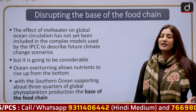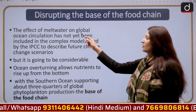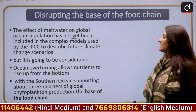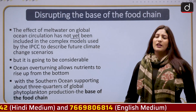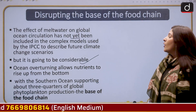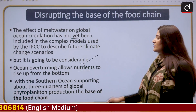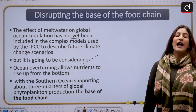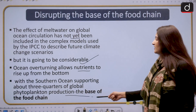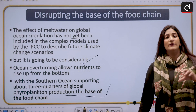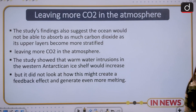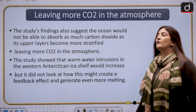The effect of meltwater on global ocean circulation has not been included in any IPCC reports using complex models, but whatever the change, it is going to be considerable. Ocean overturning allows nutrients to rise up from the bottom, which is very important for phytoplanktons — the base of the food chain. If phytoplanktons are disturbed, every other species will also be disturbed, distorting the entire food web.